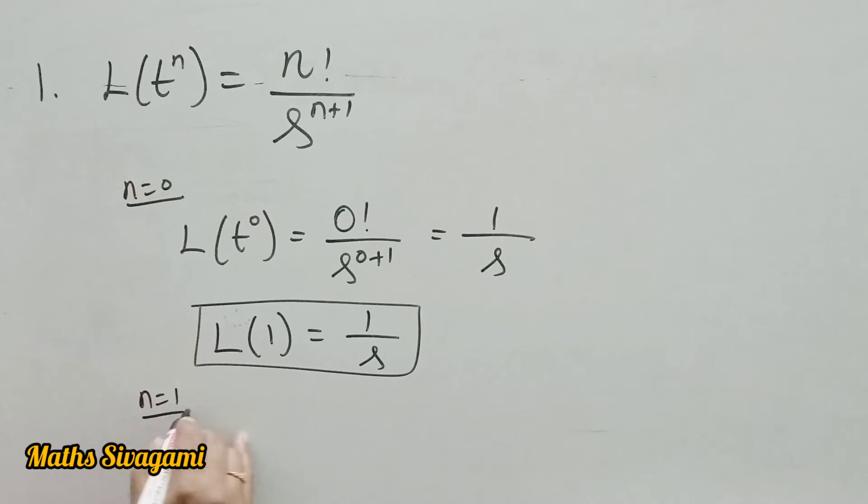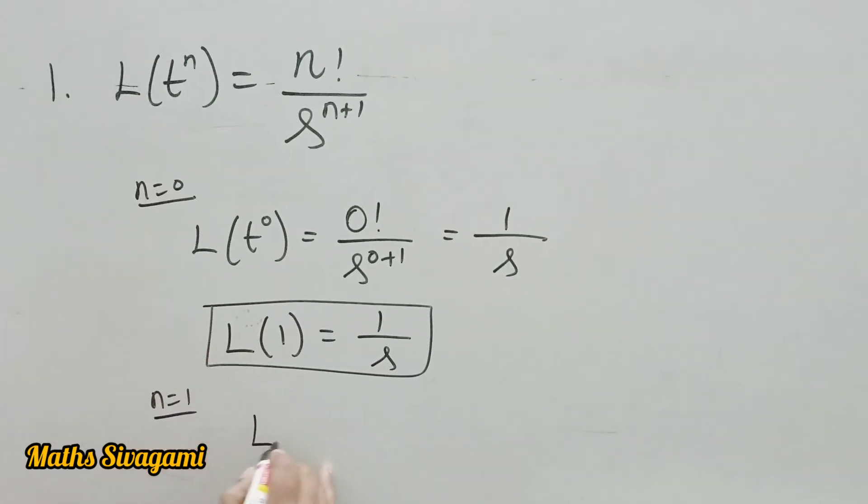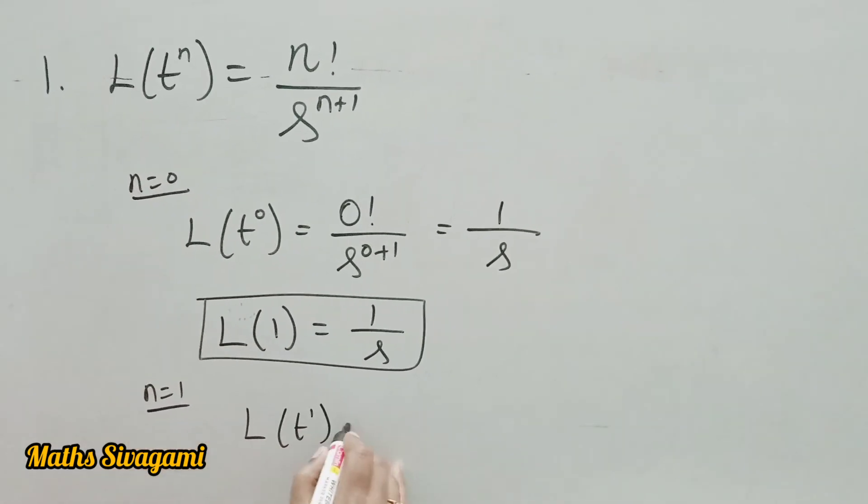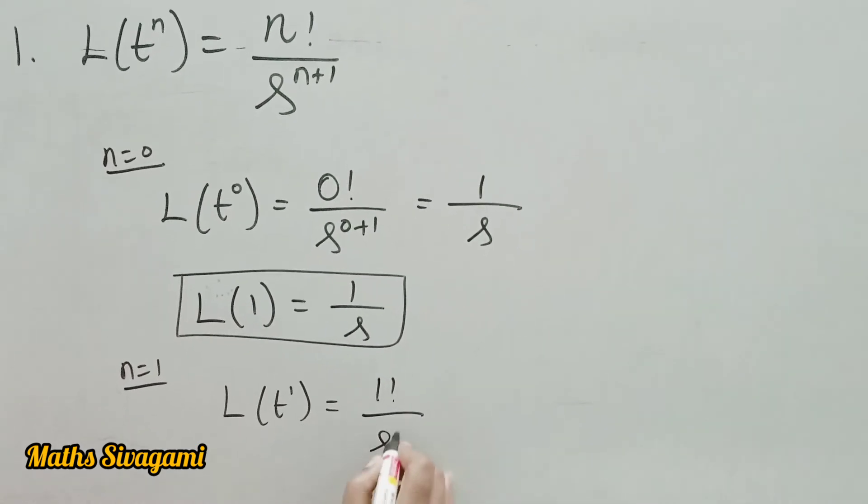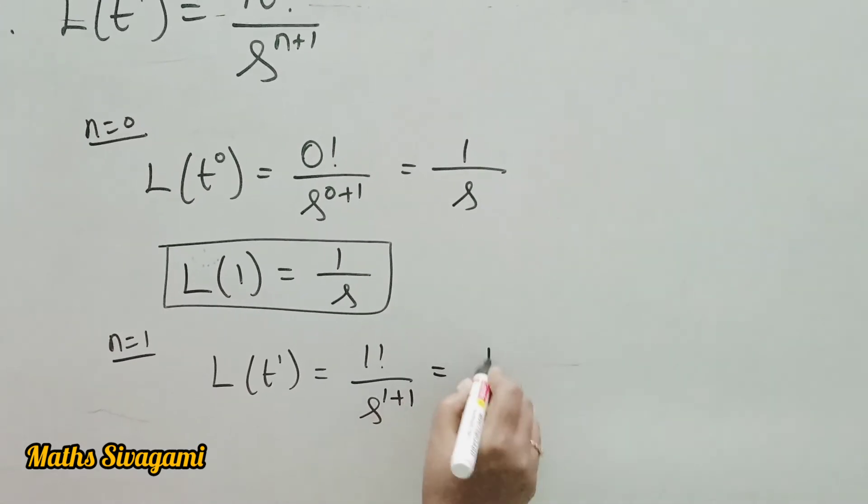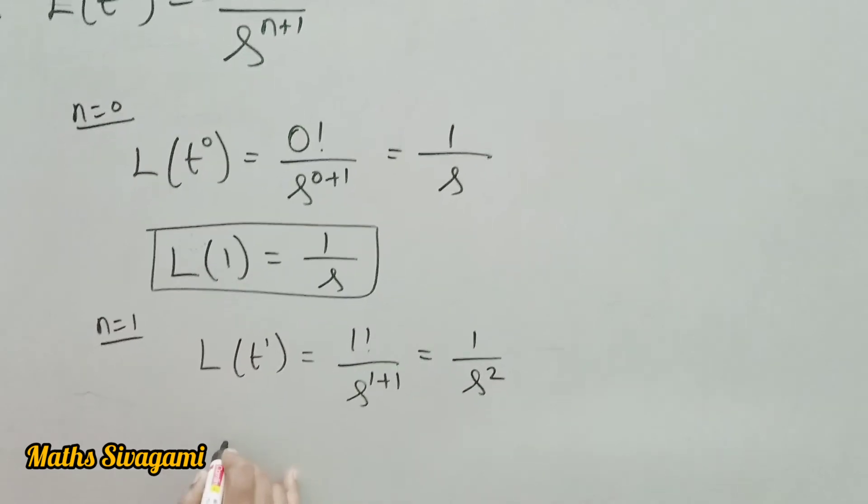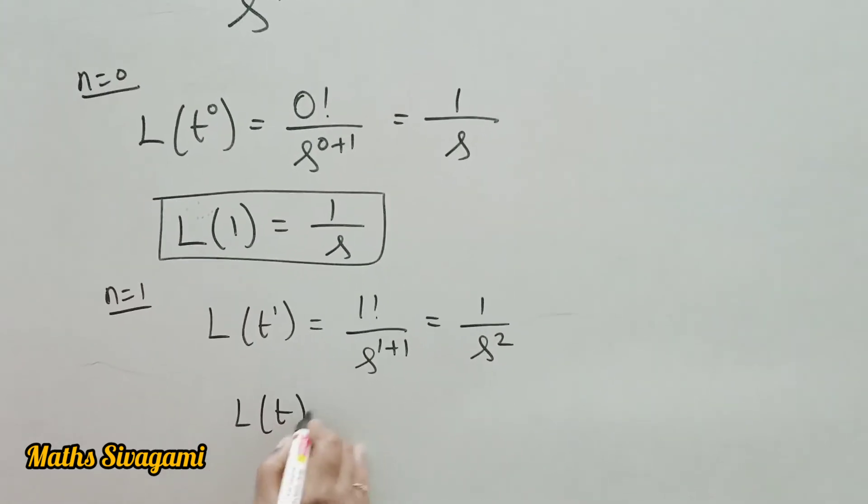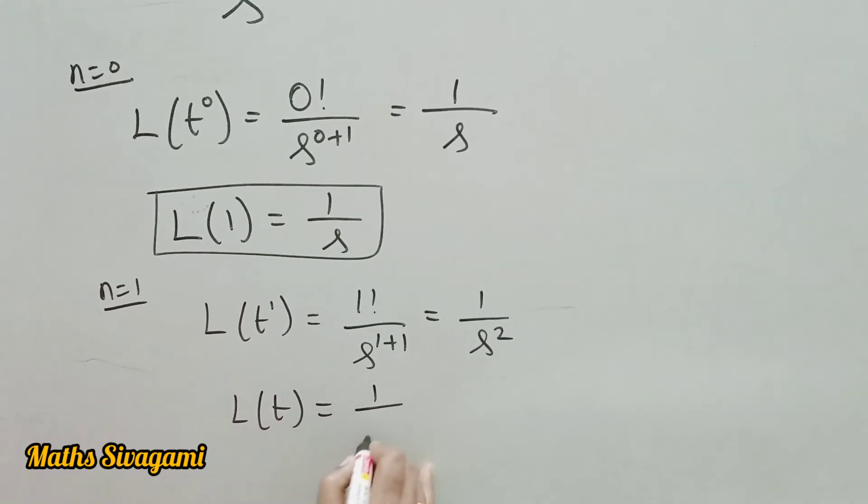Next, if n equals 1, put that in the formula: L of t power 1, that is t, is equal to 1 factorial divided by s power 1 plus 1. That is 1 by s square. Therefore, we are getting another formula: Laplace of t equals 1 by s square.